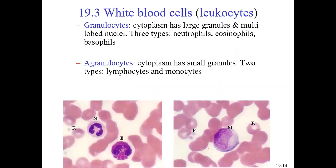Section three covers leukocytes, or white blood cells. There are two main categories: granulocytes and agranulocytes. A granulocyte is a cell that has lots of large granules visible when stained. There are three types of granulocytes we'll discuss in lab: neutrophils, eosinophils, and basophils.